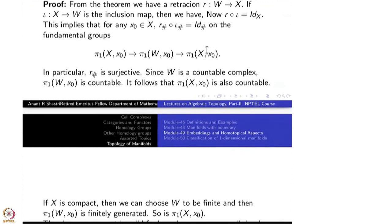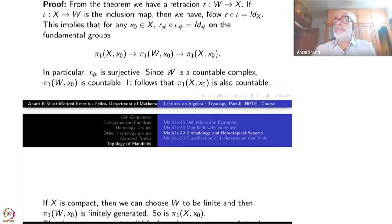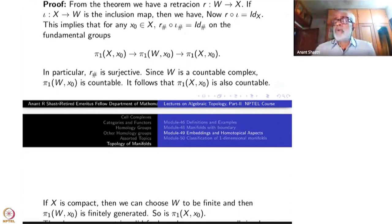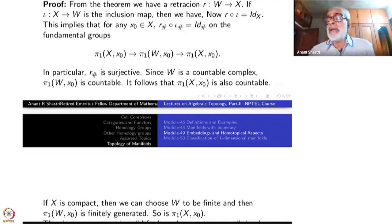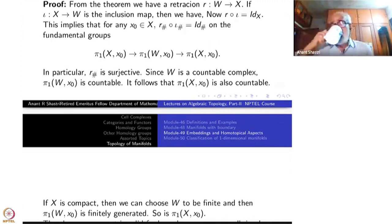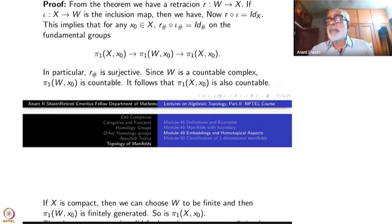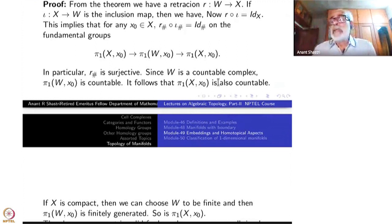So the homology groups of manifolds are countable and finitely generated when compact. The homology is also finitely generated as a module, and cannot go on in infinitely many dimensions.